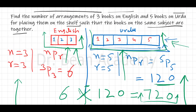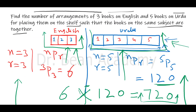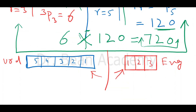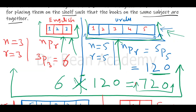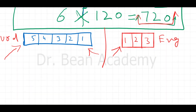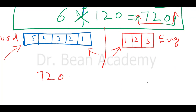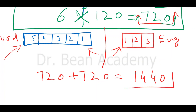At first the Urdu books were on the right side and English books were on the left side, but now I put English books on the right side and Urdu books on the left side — it's a different configuration. I can do the same process for this arrangement too and of course I will get the same number of arrangements: 720. So the total answer should be 720 plus 720, which equals 1440 arrangements. Don't forget this point!